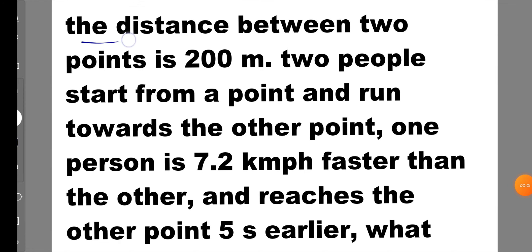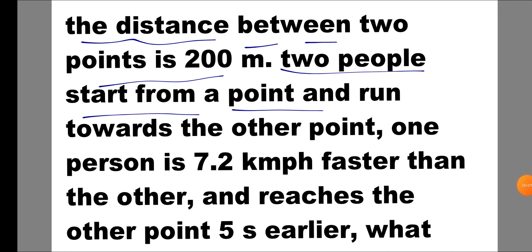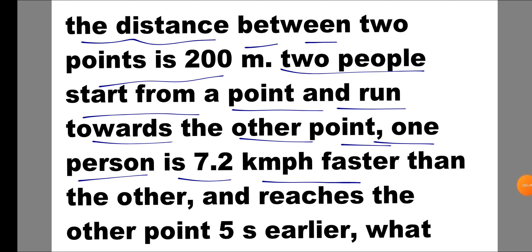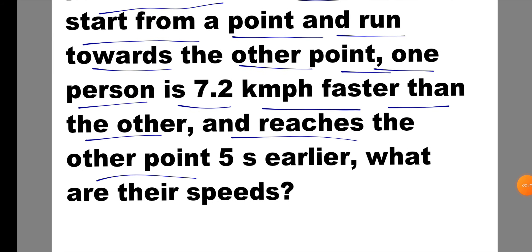Today's question: the distance between two points is 200 meters. Two people start from point A and run towards the other point. One person is 7.2 kilometers per hour faster than the other and reaches the point 5 seconds earlier. What are their speeds? We have to find the speed from this question.